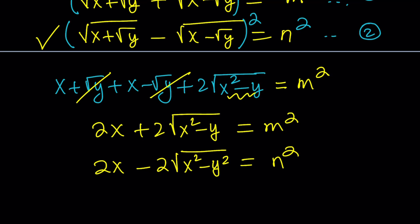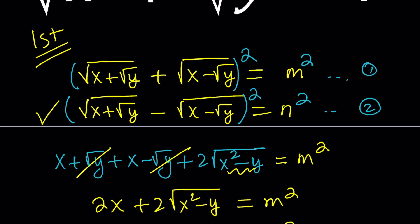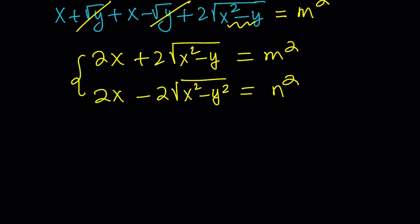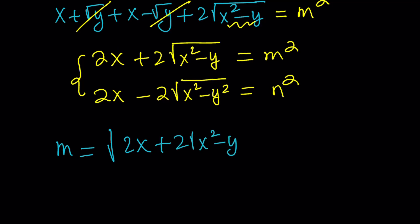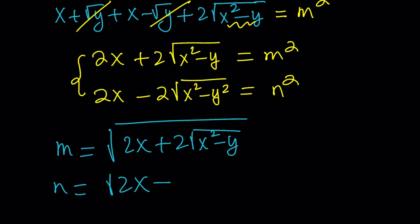From here we can basically solve for m and n. First, take the square root of both sides. Since m and n are both positive — if you look at the first expression we're adding two radicals, both positive while defined in the real world — m can be written as the square root of 2x plus 2 times the square root of x squared minus y, and n as the square root of 2x minus 2 times the square root of x squared minus y.